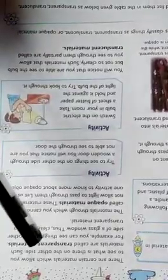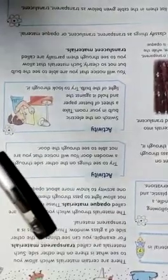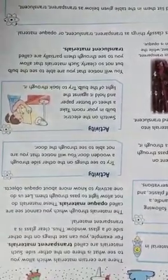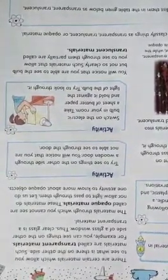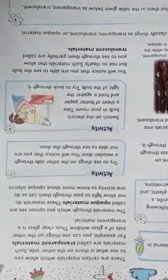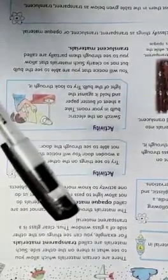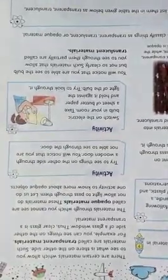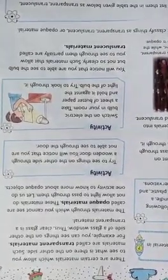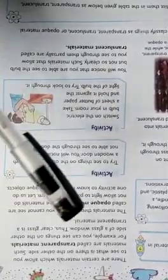There are certain materials which allow you to see what is there on the other side. Such materials are called transparent materials. For example, we can see what is there on the other side of a glass window. Thus, clear glass is a transparent material.